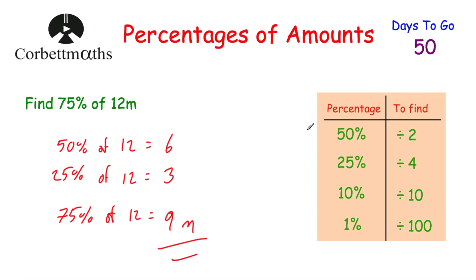Another approach would have been to find 25% by halving and halving again to get 3, and then multiply by 3, because three lots of 25% is 75%, and 3 times 3 is 9. That would have worked as well.